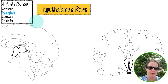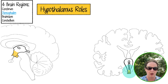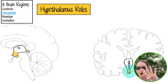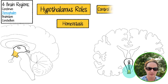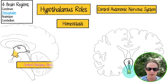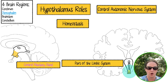Next, we'll look at the hypothalamus. I want you to learn four big roles for the hypothalamus: first, homeostasis; second, controlling the autonomic nervous system; third, controlling the pituitary gland; and fourth, it's part of the limbic system. Now let's look at the homeostasis roles.